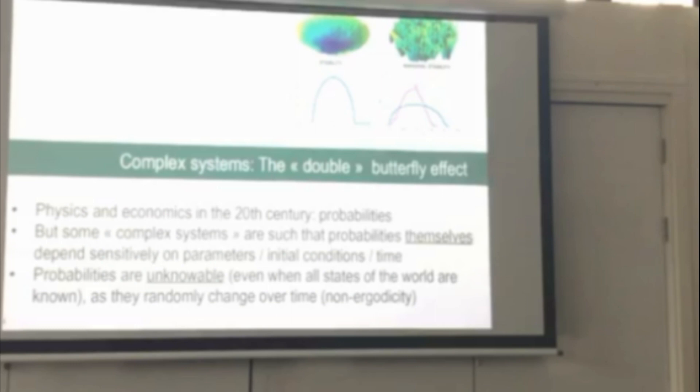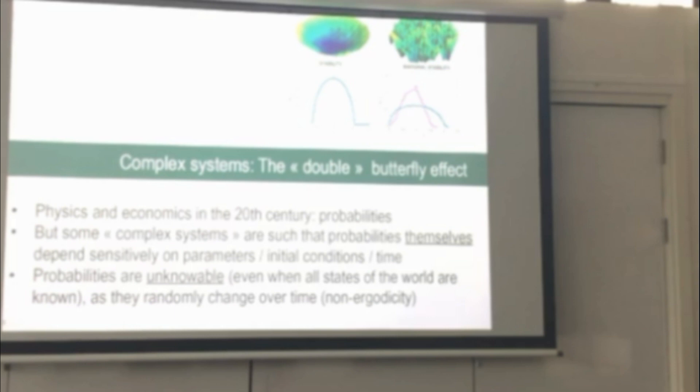But what happened in the last 50 years is the physics of complex systems, where one can talk about a kind of double butterfly effect, which is that these complex systems are such that probabilities themselves become chaotic, become sensitive to parameters, initial conditions, or even time. And so probabilities themselves in these systems are unknowable, which I think conceptually is quite interesting.